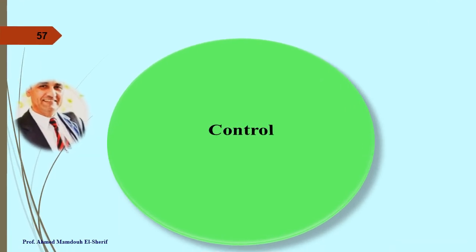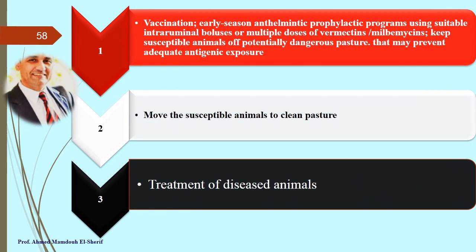Control of husk disease begins with vaccination and early-season anthelmintic prophylactic programs using suitable intra-ruminal boluses or multiple doses of ivermectins. Keep susceptible animals off potentially dangerous pasture to prevent inadequate antigenic exposure. Move susceptible animals to clean pasture, and ensure treatment of diseased animals.